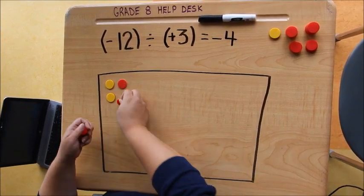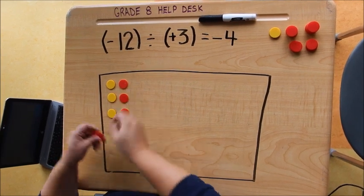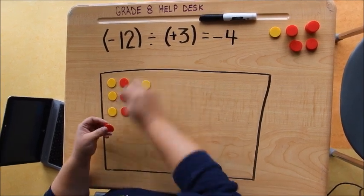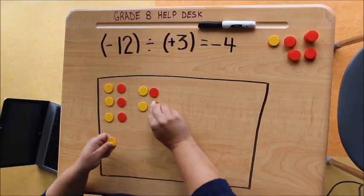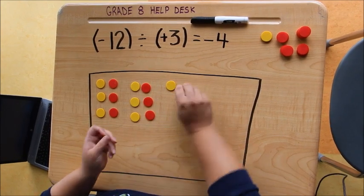So instead, what I'm going to do is I am going to put in groups of zero pairs until I have 12 negative tiles in the bank.